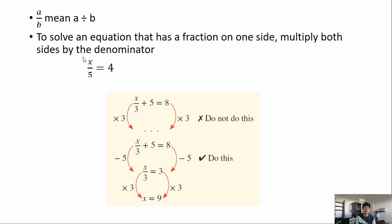The first thing we need to know for this lesson is that a fraction means division, so a over b just means a divided by b. To solve an equation that has a fraction on one side we need to multiply both sides by the denominator. So for x over 5 equals 4, to get rid of the 5 on the left we multiply both sides by 5. These cancel out and that gives me x equals 20. To get rid of a denominator, since that's division, you just multiply it by the same number.